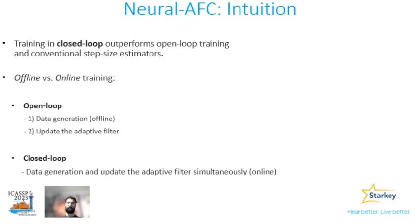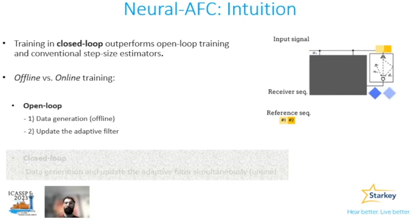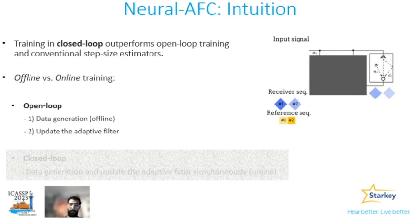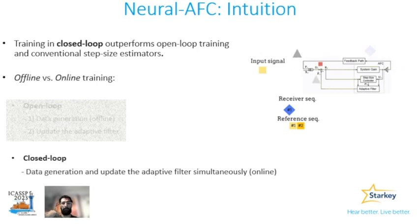In open-loop systems, the data can be generated all at once and the adaptive filter can be updated offline. As shown in this animation, the goal is to generate the reference sequence shown in blue, consisting of two data frames. One can ignore the adaptive filter completely and generate the data by convolving the input sequence — the yellow one — with the echo path. Once the data is generated, we can start updating the filter. For the closed loop, the story is different: the data generation and the adaptive filter update must be done simultaneously — that's why we call it online training. We obtain the receiver sequence block by block, as opposed to open-loop training where we can generate the whole sequence at once.